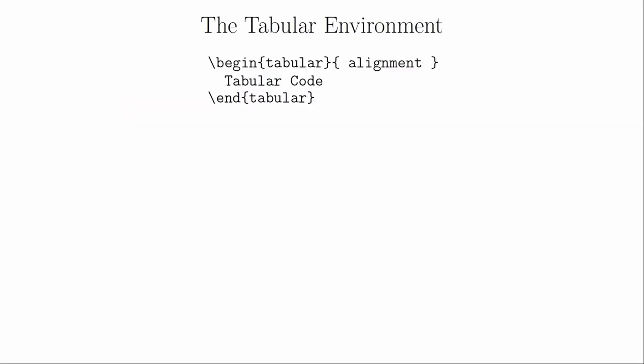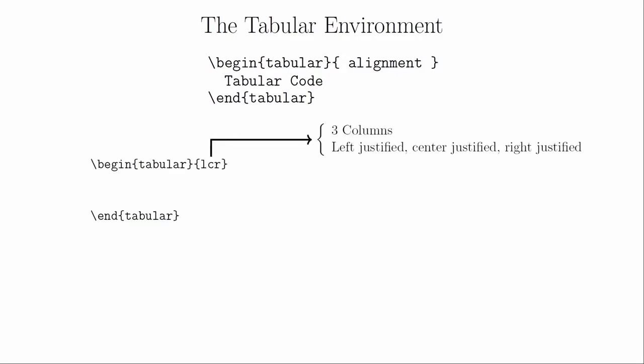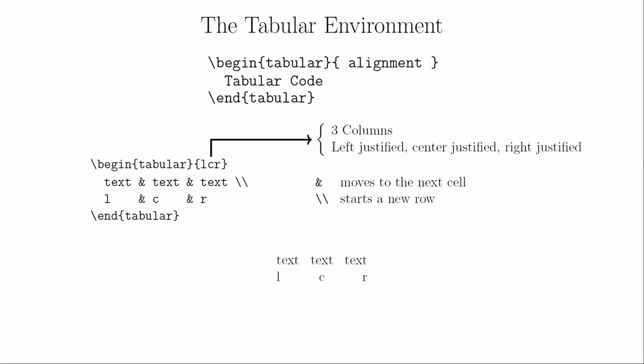The tabular environment requires you to define the number of columns and their alignments. For example, we will use LCR to define our columns — meaning three columns where the first is left justified, the second is centered, and the third is right justified. To fill in the values in the table, we simply work in rows from left to right. Each time we want to move over to the next cell, we use an ampersand. And when we get to the end of a row, we use a double backslash to start a new row. If you forget the double backslash, LaTeX will complain when you try to compile your document.